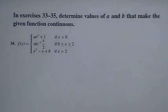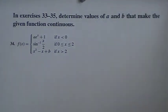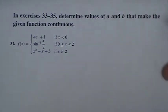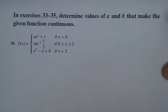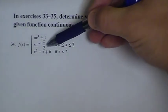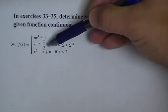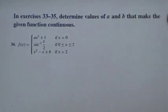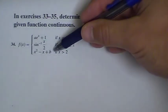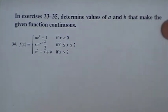This is problem 34 from section 1-4. The directions say that we want to determine the values of constants a and b so that the function we're looking at is continuous. This is a pretty intense-looking piecewise function — it has a component that's exponential, a component that's an inverse sine, and a component that's a parabola. We want to find the values of a and b that make this function continuous.